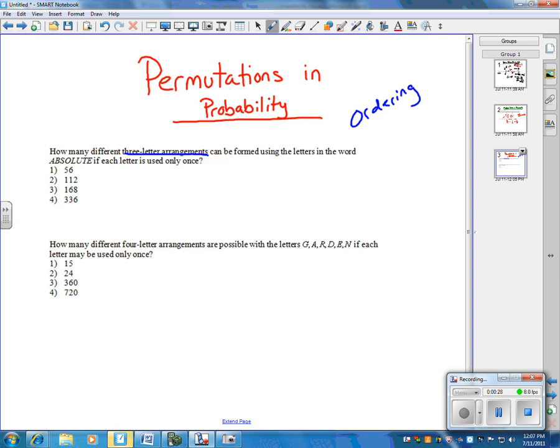There's two ways that you can do probability and permutations to get an answer. One of the easier ways is thinking about how many different items you have to choose from. In the word absolute there is eight letters. Now we need to pick three of those letters.